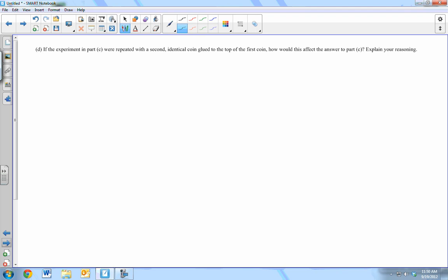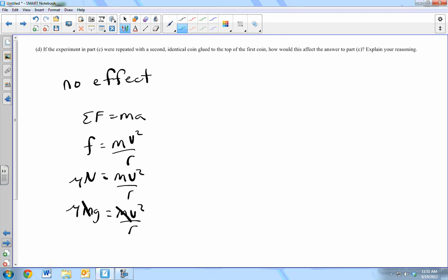Last part, if part C were repeated with the second identical coin glued to the top of the first one, how would it affect the answer to part C? How would that affect? No effect. And you can write a whole paragraph on how to do this, but it's better if you showed it algebraically. You can show the masses dividing out. So, F equals MA, friction equals MV squared over R, mu normal force equals MV squared over R, mu MG equals MV squared over R, and that's all you've got to show. And that's all you've got to do. Right?